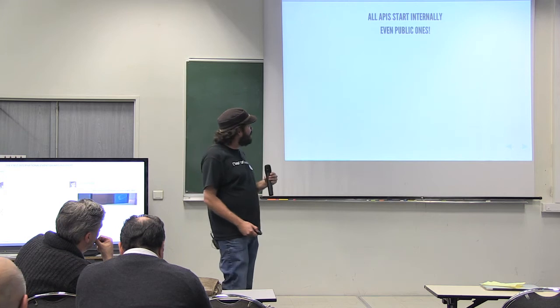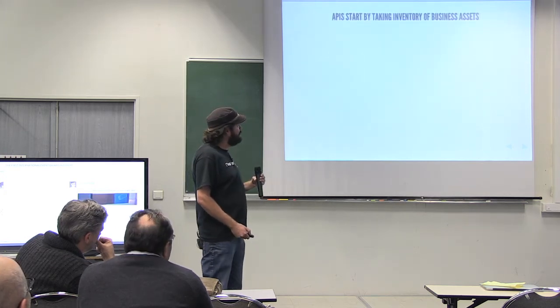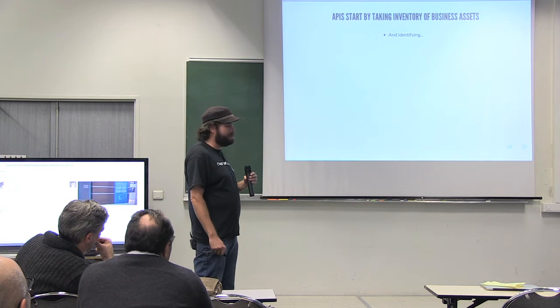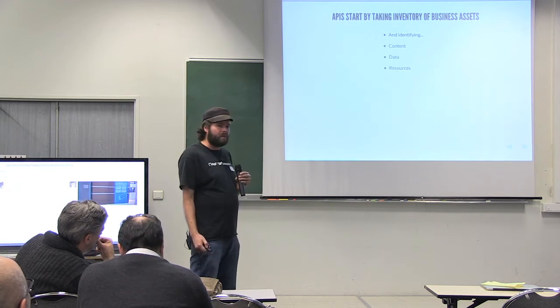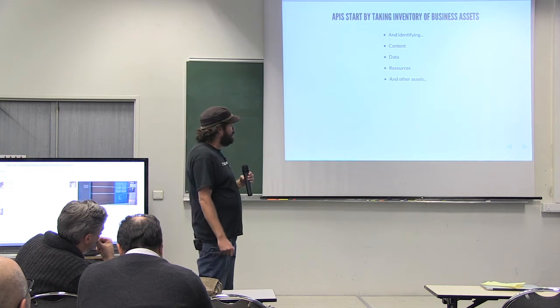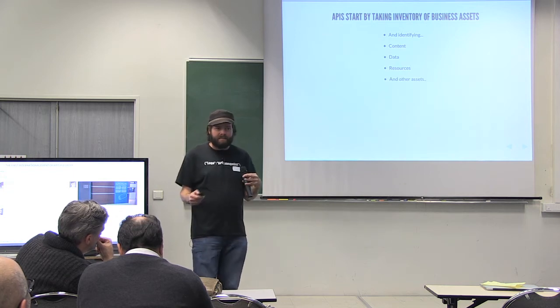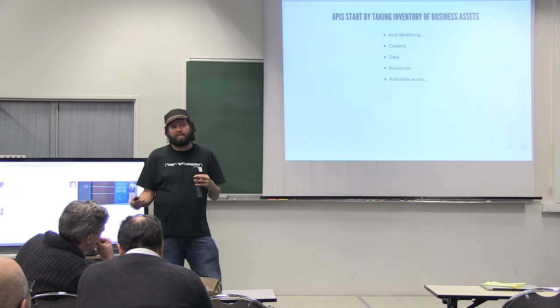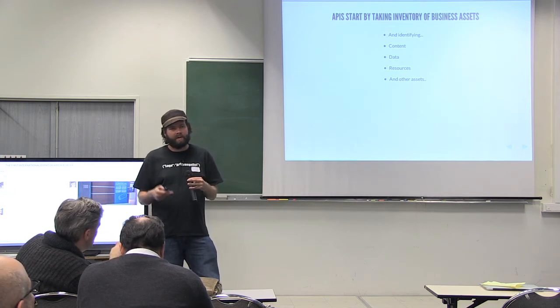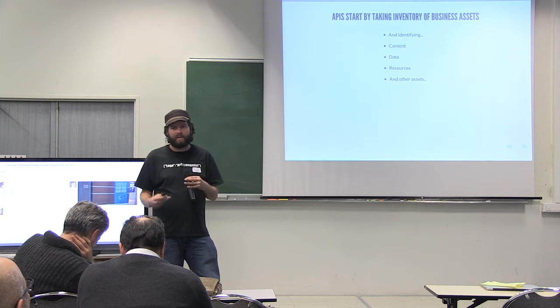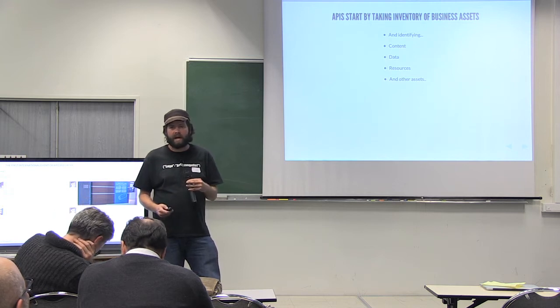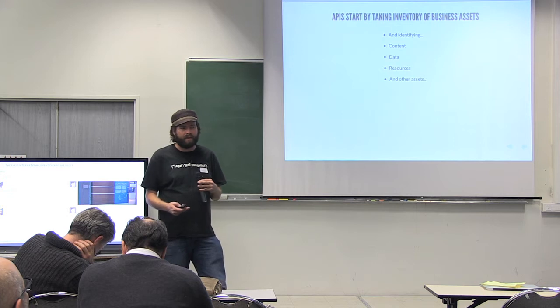So all APIs start internally, even the public ones. They start by taking inventory of business assets. Identifying content, data, and other resources that are important to your organization. Other assets that you feel your partners could use and could be exposed publicly. So this process, I feel, is one of the most important pieces of the API process. It's going through and identifying all of this content and data that exists in your organization.